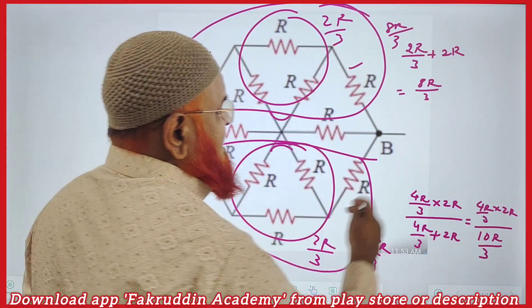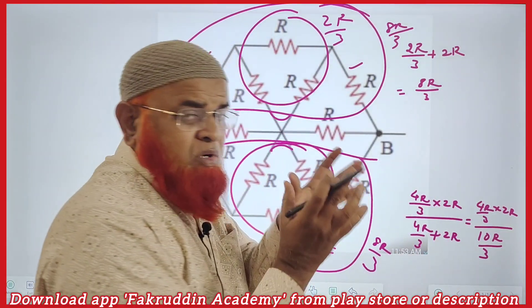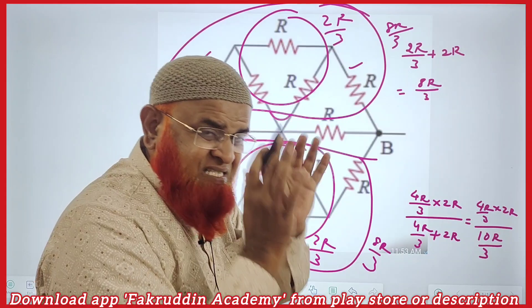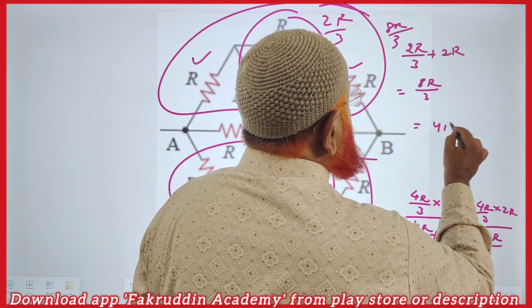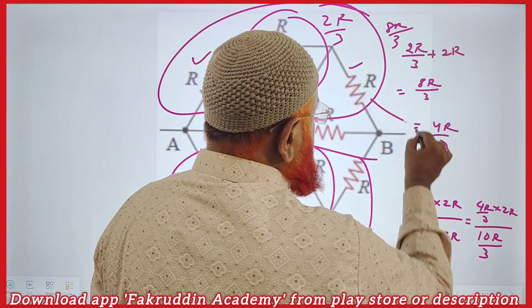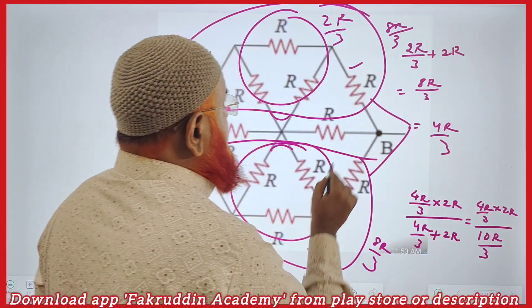by 3. They are in parallel, so when two resistors are in parallel and they are the same, then the result will be half. That means 4R by 3. These combined together is 4R by 3, but